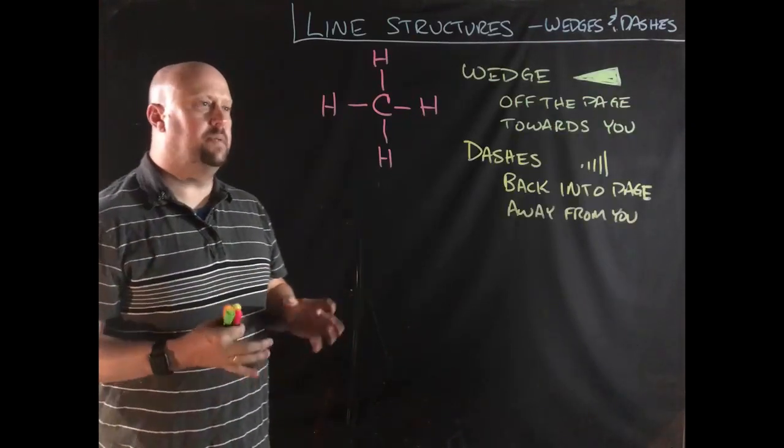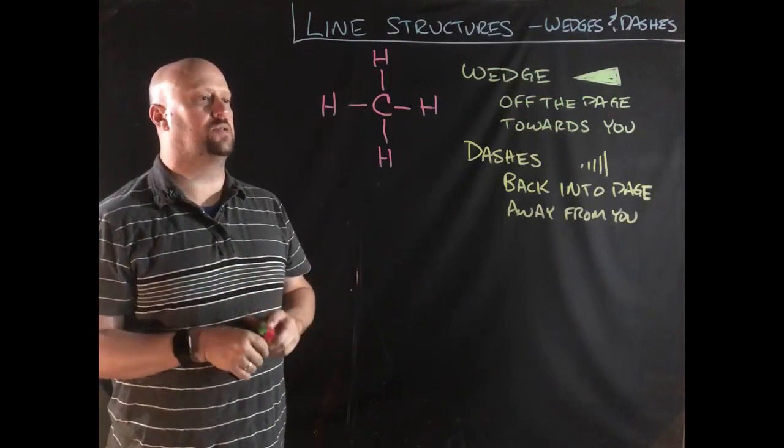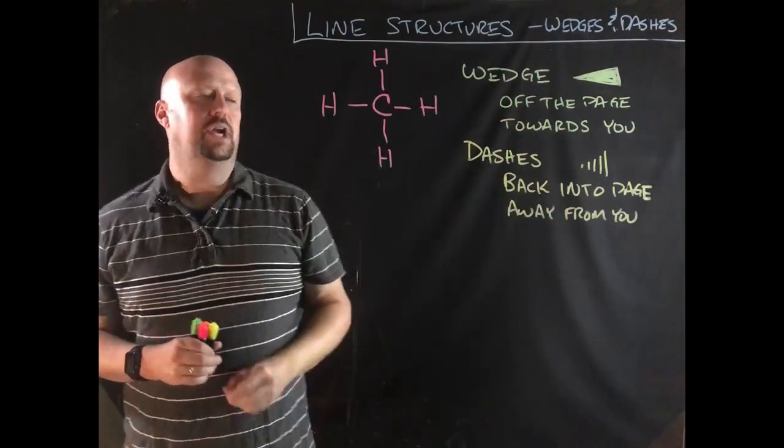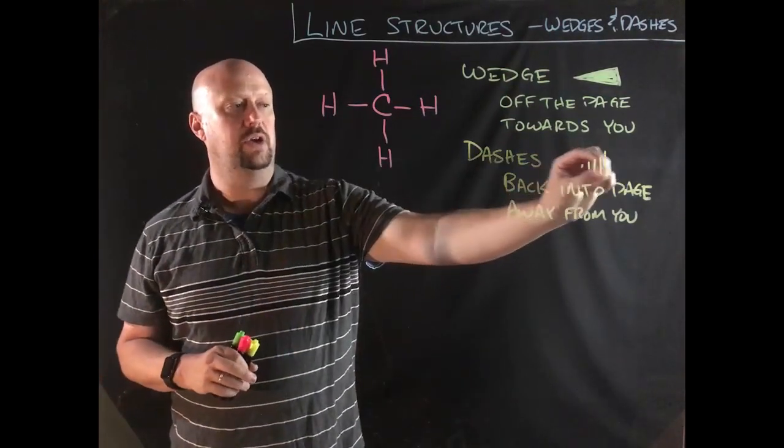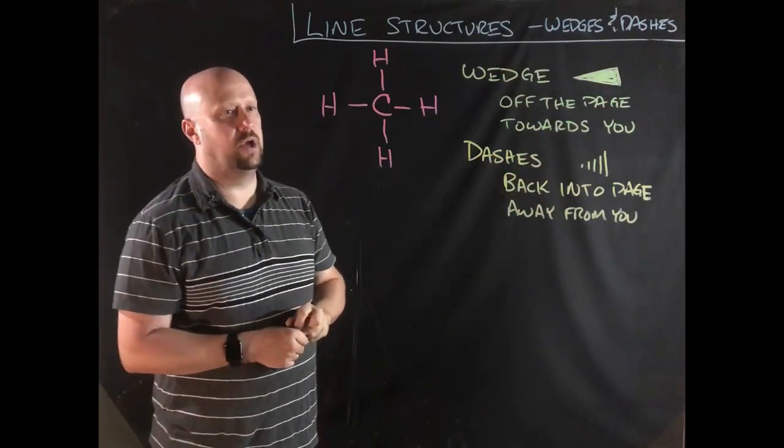So here's how we do that. So to be able to three-dimensionally represent these things, or at least to give some indication of what the three-dimensional structure will be, we're going to use two things. We're going to use a wedge and we're going to use dashes. And really, to be perfectly precise, we're going to use a dashed wedge and a solid wedge to show us what's going on.